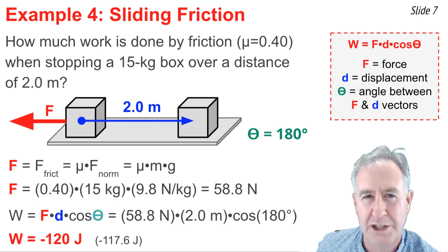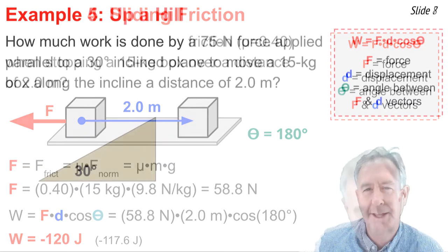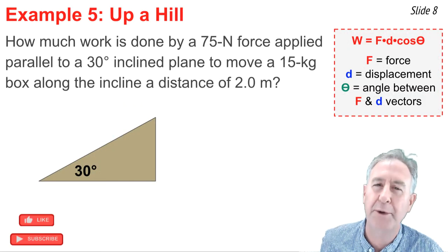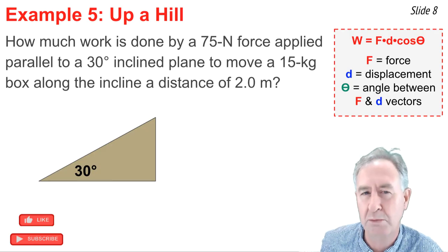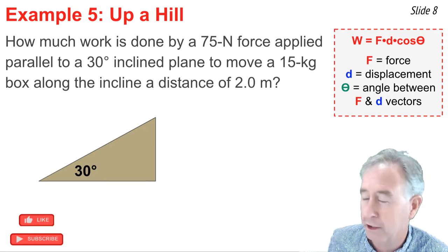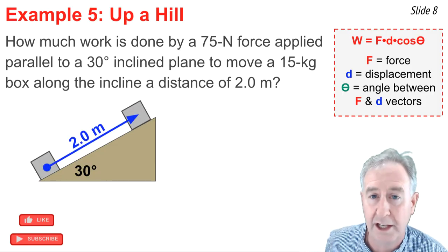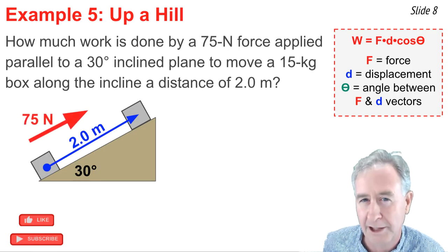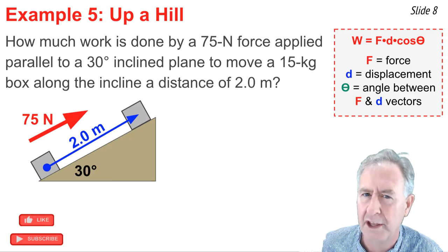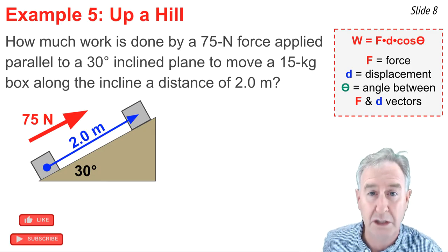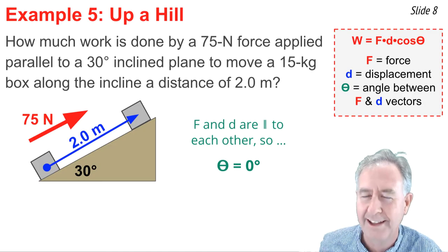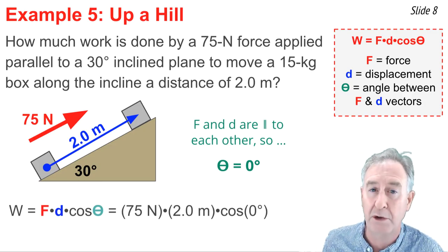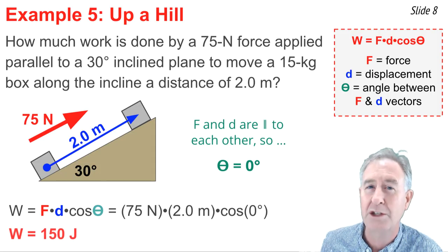Our fifth example involves motion along an inclined plane. I want to know how much work is done by a 75-newton force applied parallel to the incline to move a 15-kilogram box a distance of 2 meters along the incline. The incline has a 30-degree angle. The box moves parallel to the incline because of a force that also acts parallel to the incline. Importantly, theta in the work equation is not 30 degrees — that's the incline angle. Theta is the angle between the force and displacement vectors, and since they go in the same direction, theta is 0 degrees. Therefore: 75 newtons times 2 meters times the cosine of 0 equals 150 joules.